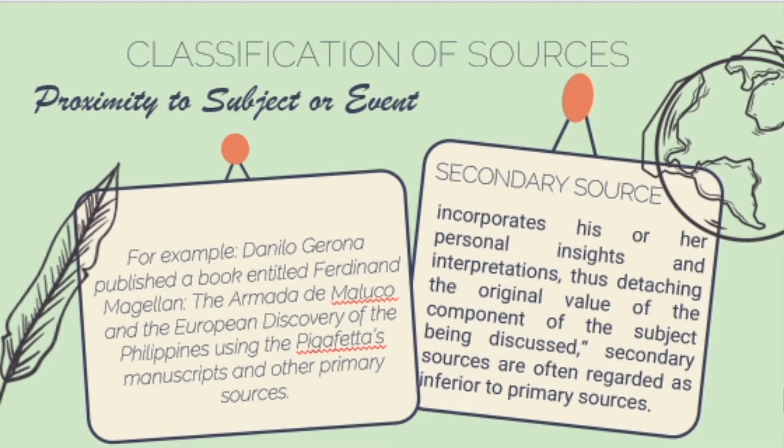Secondary sources are often regarded as inferior to primary sources because the writers of secondary sources, relying on primary sources, may put in an inference — while writing, they create their own judgment or conclusion. There could be biases because it is based on the interpretation of what came from the primary source. For example, if you witness an event and you tell your friends about it, you are the primary source; your friends retelling it becomes secondary, and the information is likely to have additions or omissions.